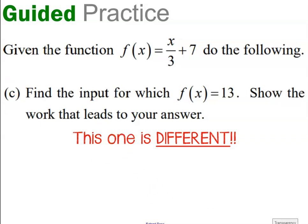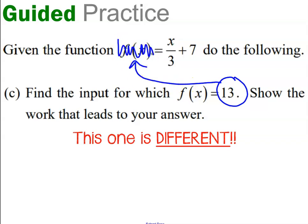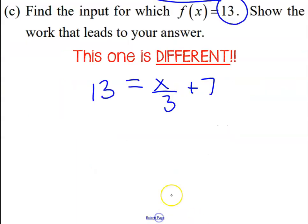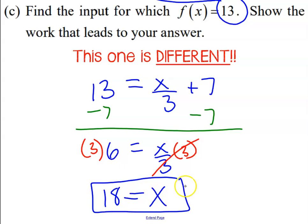Take a look at question c: find the input for which f of x equals 13. Now be very careful — this one is different. It doesn't say f of 13. It says function f, when you put a number into the x position, will have an output of 13. So this time we're going to plug the number 13 into the answer side. 13 goes on the left and the entire function rule remains unaltered. Use your basic properties of equality, isolate your letter x, and you'll get the final answer: if the input was 18, that's how we would have gotten an output of 13. So x has to be 18 in order to yield an output of 13.